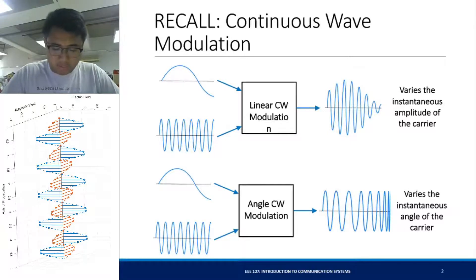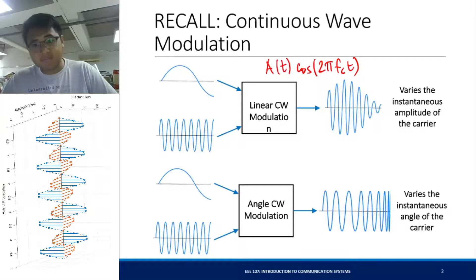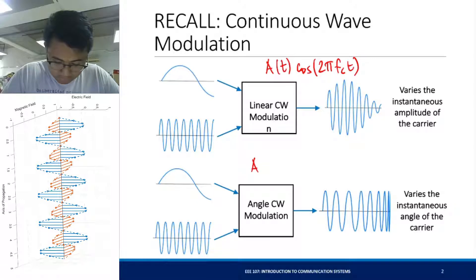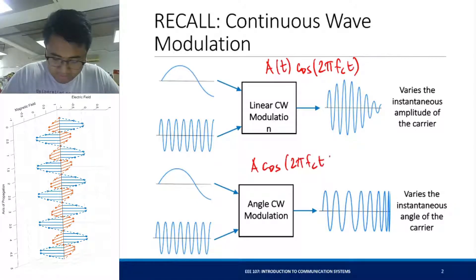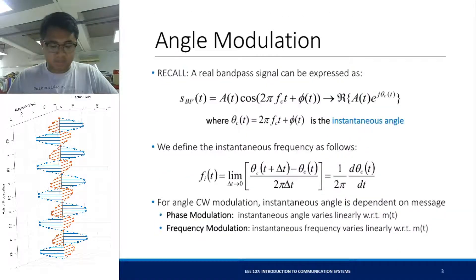So if your linear continuous wave modulation varies the amplitude with respect to time, centered around some carrier fc of t, your angle modulation has a constant amplitude but the phase varies with time. And with this, you create an angle continuous wave modulation signal.